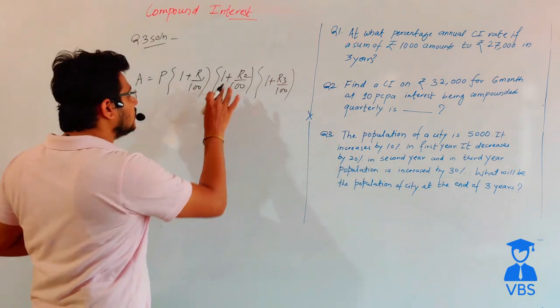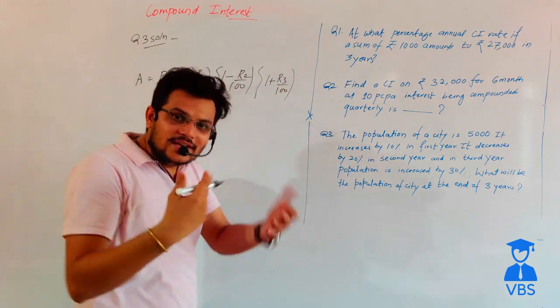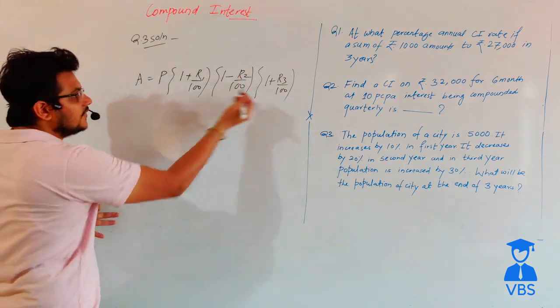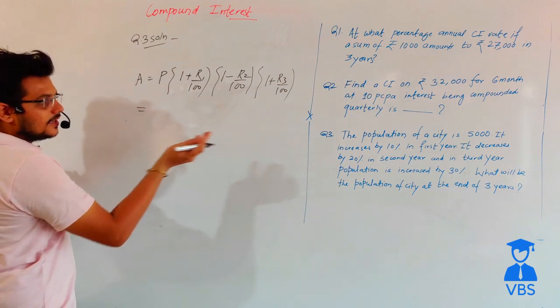For decreases, we use (1 - R/100), and for increases, we use (1 + R/100). Using this standard formula, let's find the answer.